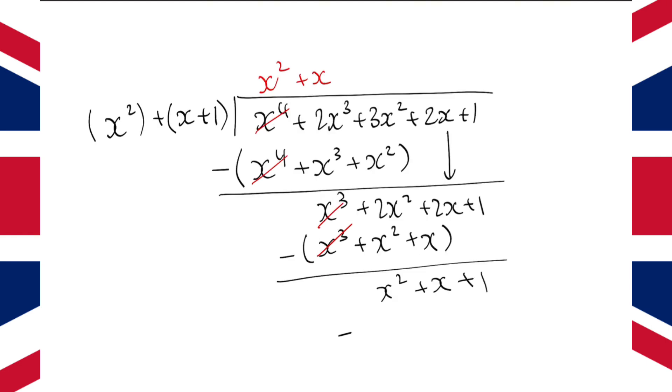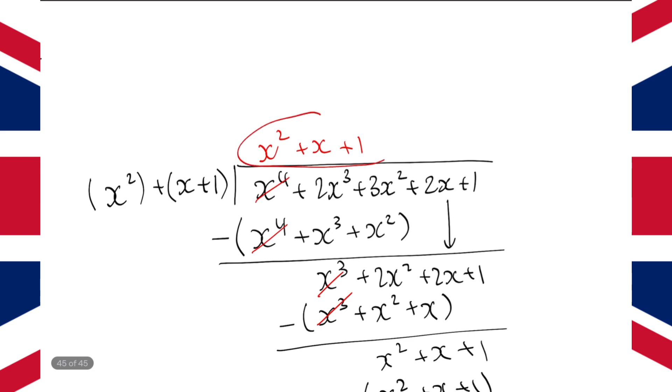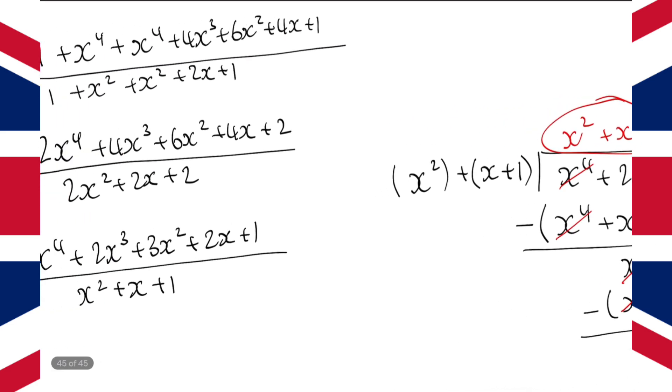Then, we repeat. So, we subtract x squared. We go, what do we times x squared by to get x squared? Well, that's just 1. And then, 1 times x plus 1 is just x plus 1. So, subtracting this, we just get 0, which means we have done it correctly. And this gives us x squared plus x plus 1 as our answer to the division.